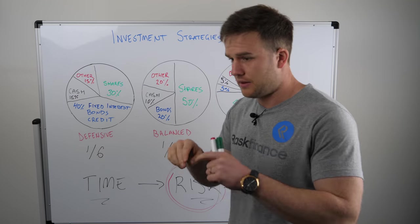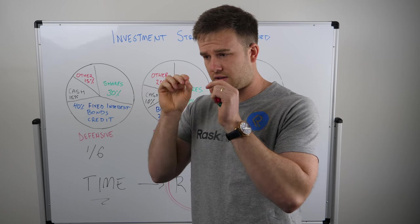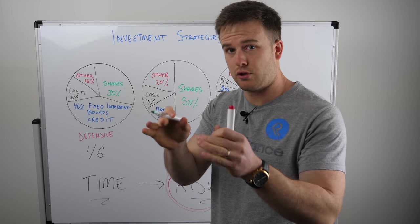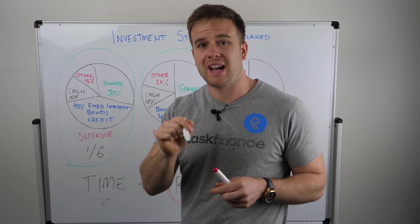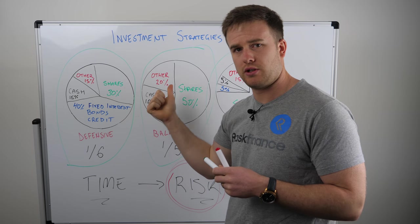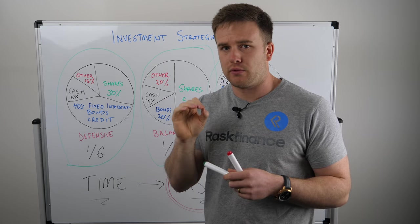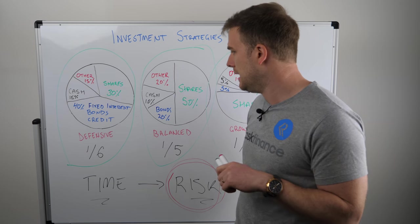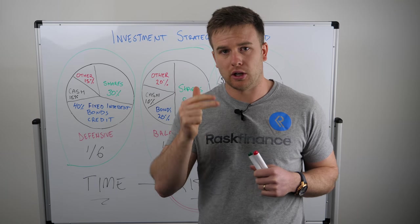Where people get confused is thinking they just select a super fund and that's the only cost. There are actually multiple layers of costs. There's a cost associated with the super fund itself, and then there's a separate cost associated with each individual investment strategy you choose, and potentially a fee to switch between them. So read the PDS of the super fund, check the fee schedule, and see exactly what you're paying for each strategy. Look at the asset allocation and then compare it to other super funds — compare the fund, compare the strategy, and compare the costs.